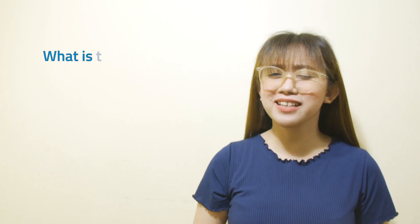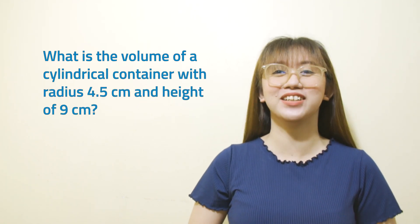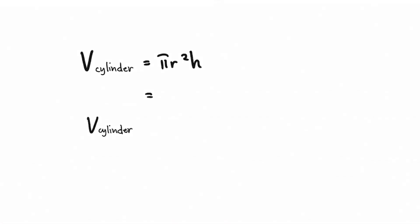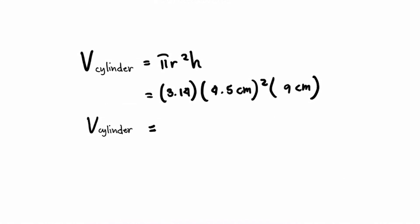Now that we know how to find the volume of different solid figures, let's try to answer these practice questions. What is the volume of a cylindrical container with a radius of 4.5 centimeters and a height of 9 centimeters? Using the formula, volume equals pi r squared times height: 3.14 times 4.5 cm squared times 9 cm. The volume of the cylindrical container is approximately 572.27 cubic centimeters.